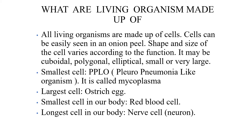The size and shape of the cell varies according to its function. The shape may be cuboidal, polygonal, elliptical, small, or very large. The smallest cell is PPLO — that is, pleuro-pneumonia-like organism, also called mycoplasma. The largest cell is the ostrich egg. The smallest cell in our body is the RBC, and the longest cell in our body is the neuron, or nerve cell.